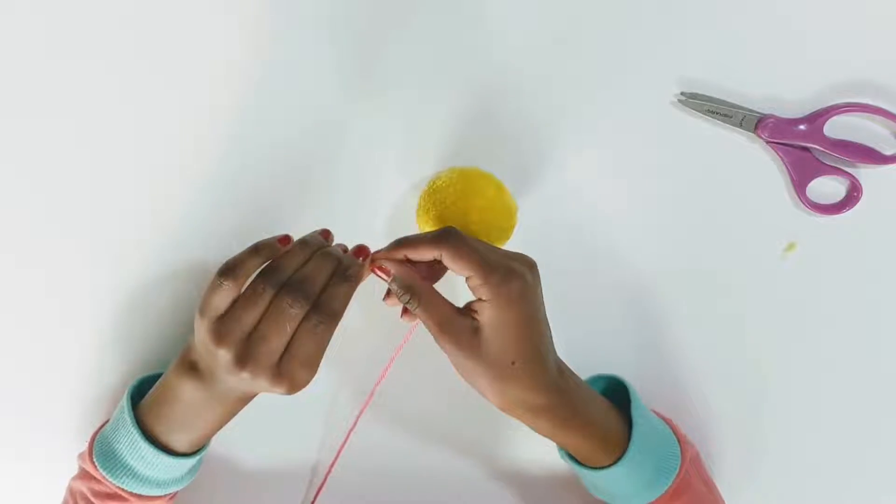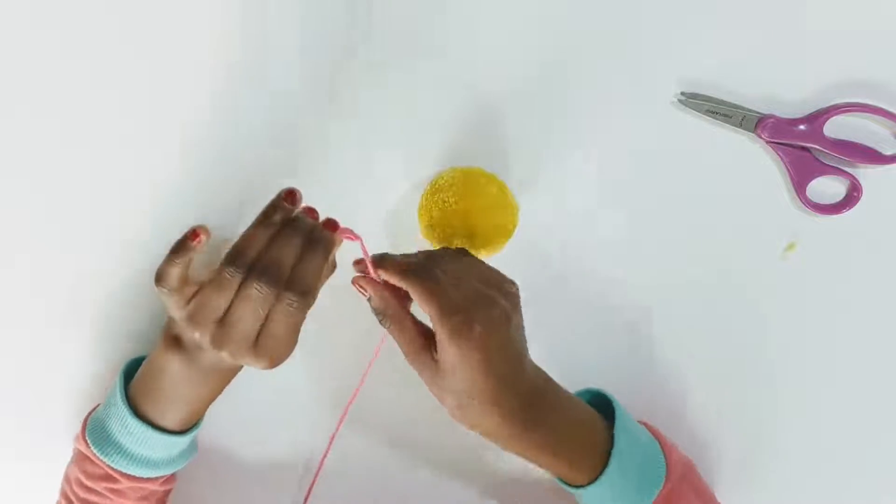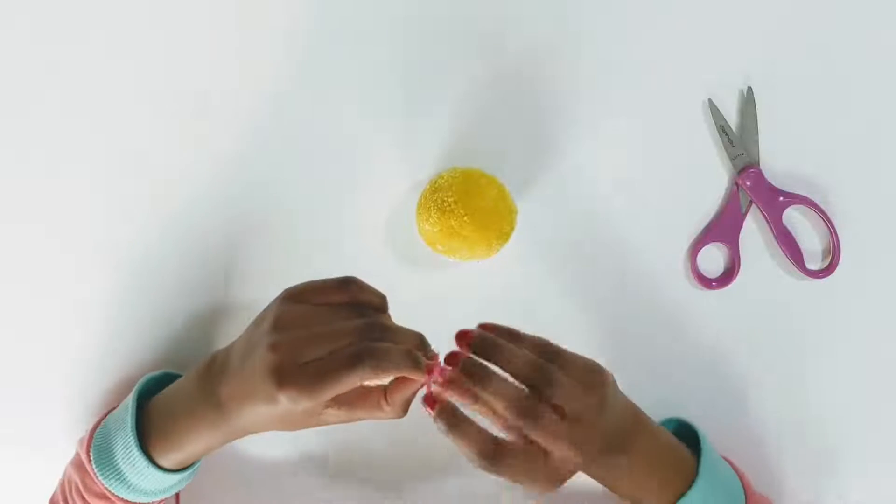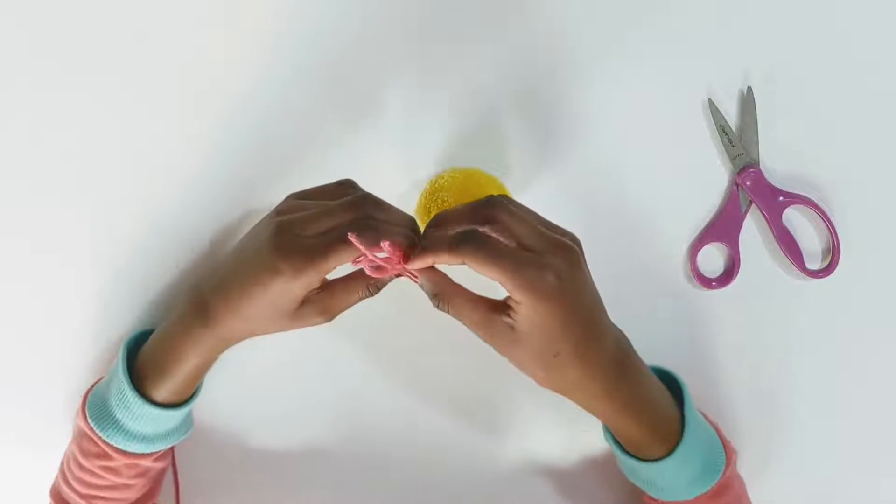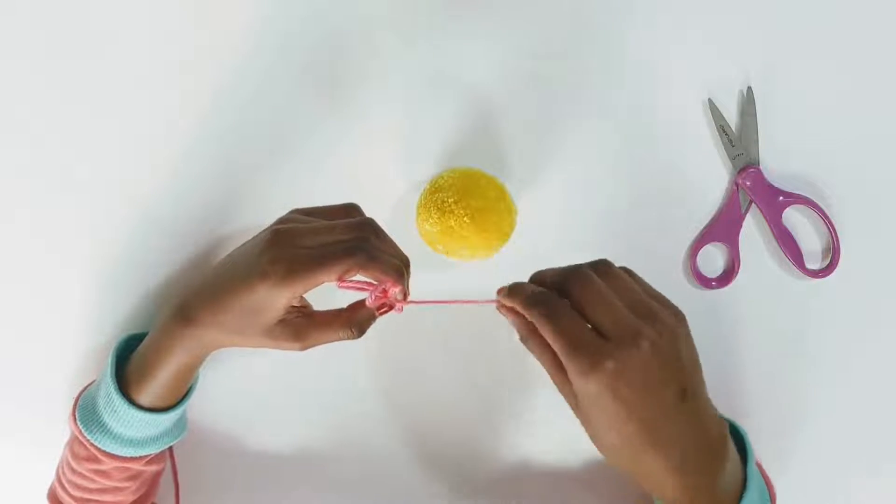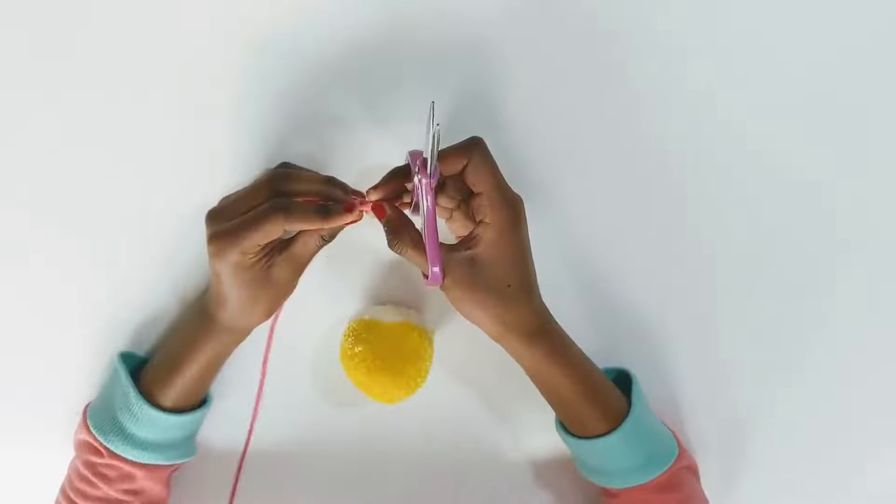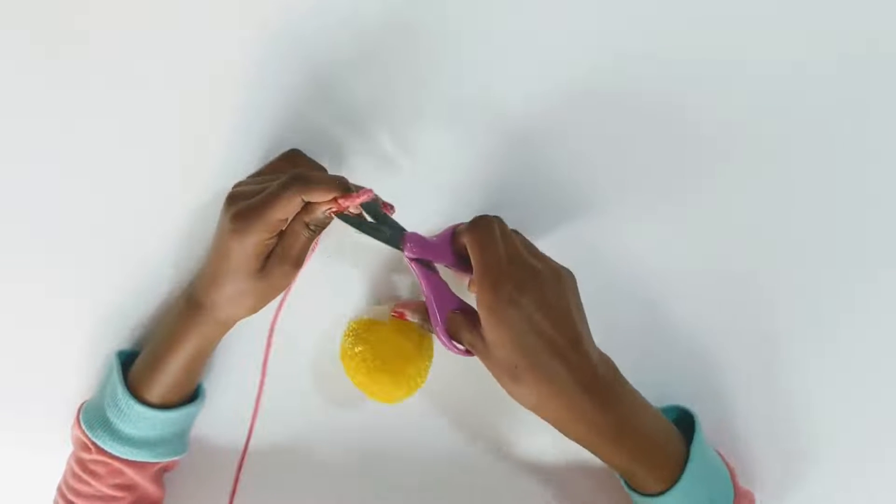Then, you're going to take this piece of yarn. Put your index and thumb fingers like this and wrap it around. And tie it to this string. Then, cut it right over here.